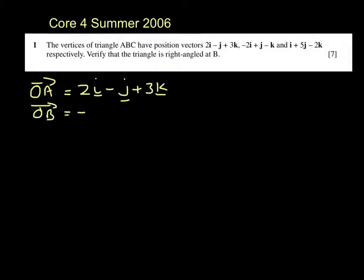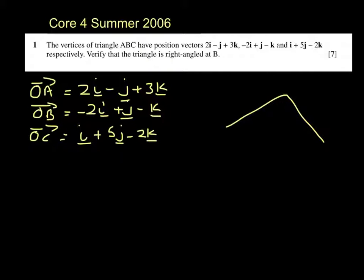O to B minus 2i plus j minus k and O to C i plus 5j minus 2k. We need to work out that the angle at B is a right angle so I need vectors for AB and BC.